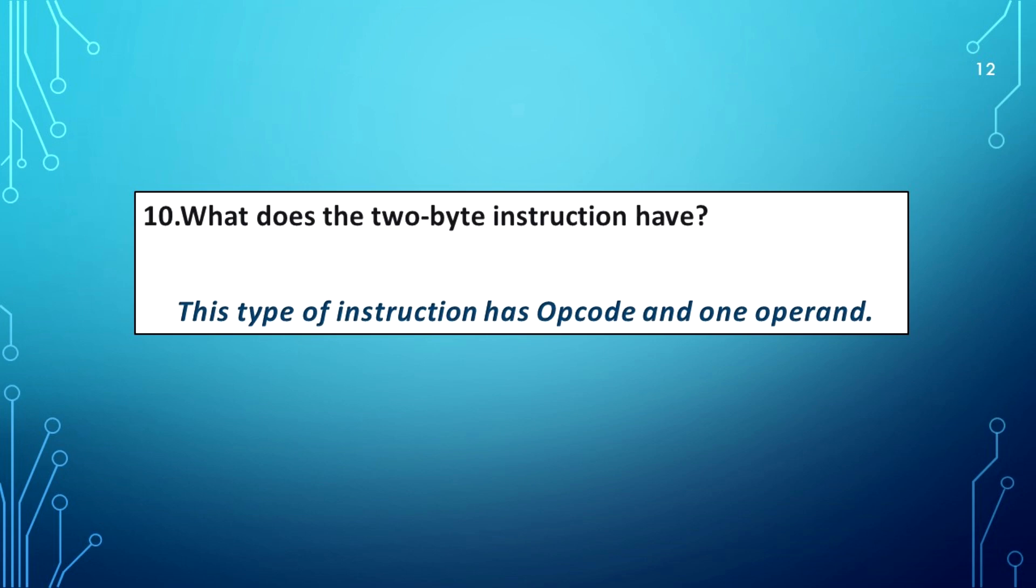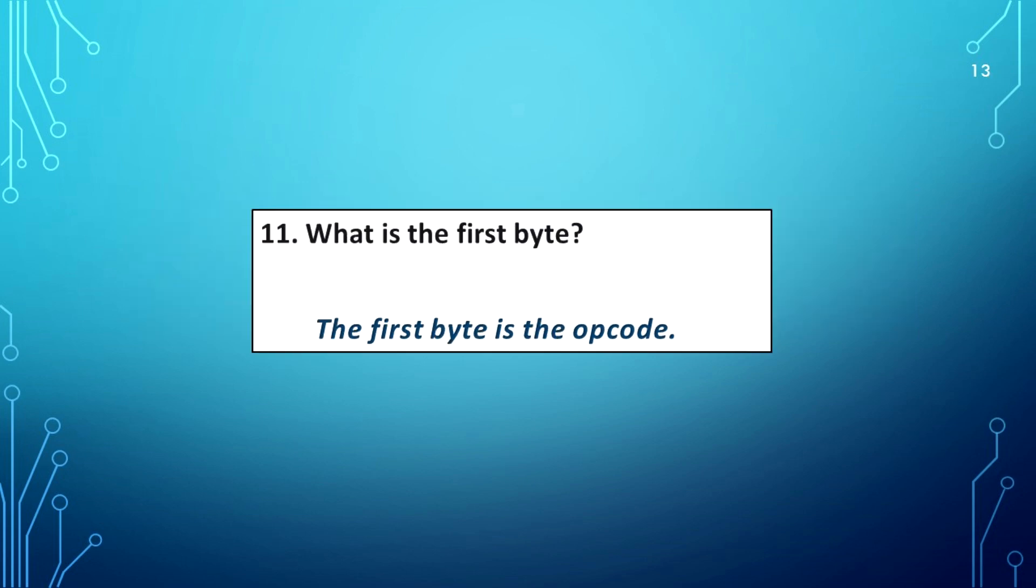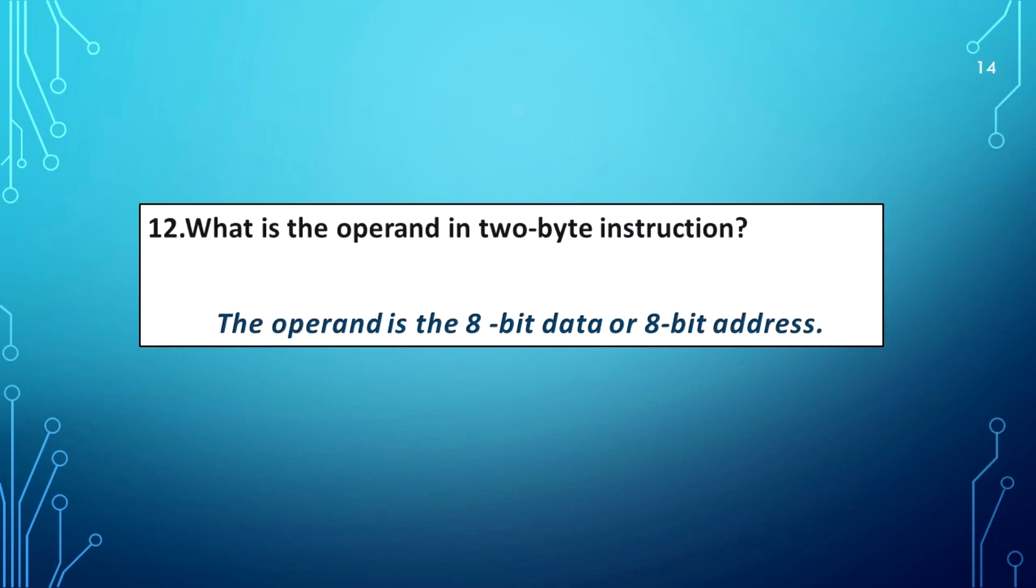What does the two byte instruction have? This type of instruction has an opcode and one operand. What is the first byte? The first byte is the opcode. What is the operand in two byte instruction? The operand is 8-bit data or 8-bit address.